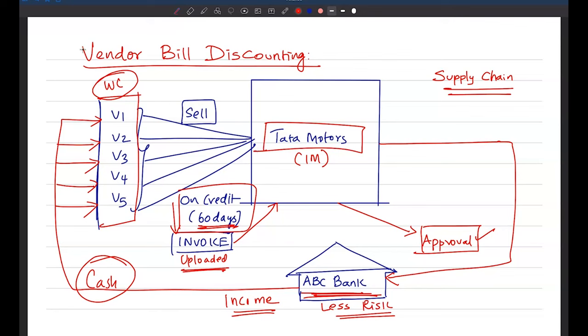And it is also really safe for the bank because for the bank there is no much of complexities. There is no mortgages. There is no detailed assessment. For the bank it is going to be an assured cash flow from the industry major on the due date. And in turn bank is also helping all these vendors to carry out their activities. So this is the flow of vendor bill financing or vendor bill discounting. Thank you so much.